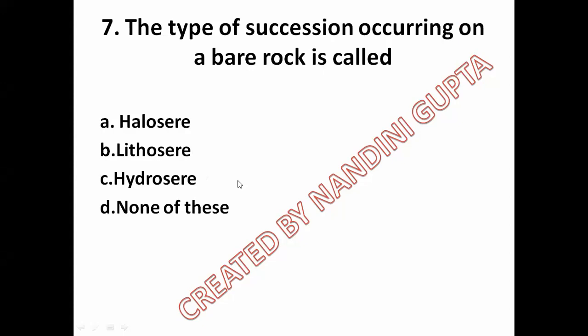The type of succession occurring on a bare rock is called option A halosere, option B lithosere, option C hydrosere, option D none of these.